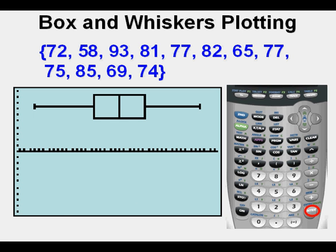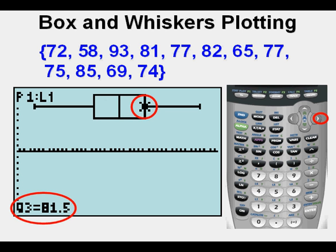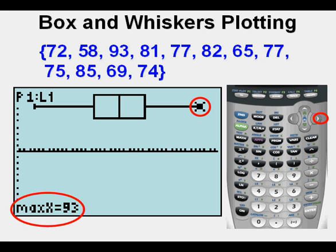We can start evaluating the box and whiskers plot by pressing TRACE. We start out at the center of the box — our median is 76. Pressing the right arrow once gets us to the right edge of the box, the boundary between the third and fourth quartiles. The value at that boundary is 81.5. When we press once more to the right, we get to the edge of the data, the maximum or high extremity, and that highest value is 93.